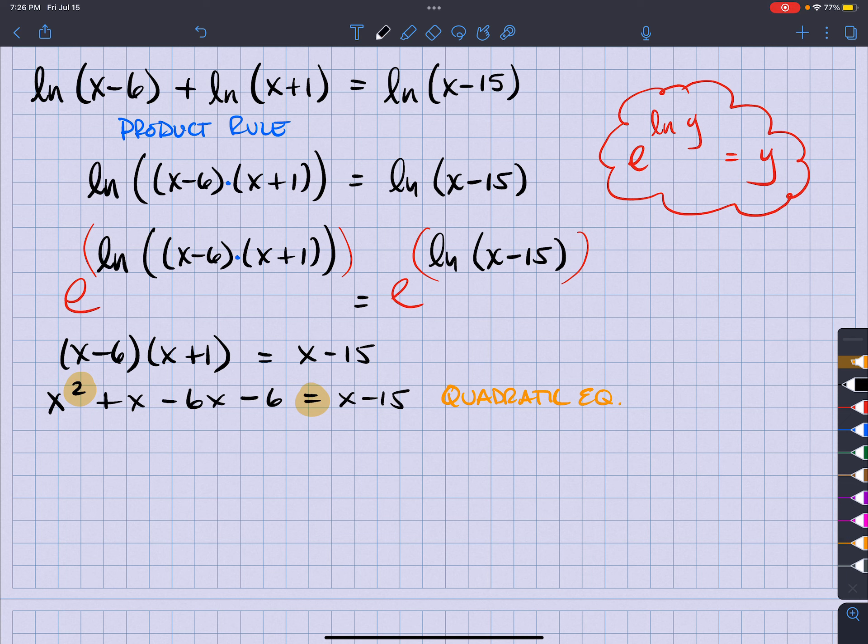So that means I'm going to get everything to one side and have a zero on the right side. So I'm going to have x squared minus 6x and I'm going to add the 15. So it's going to be plus 9.